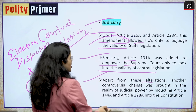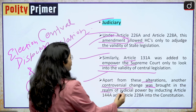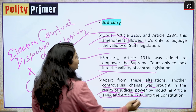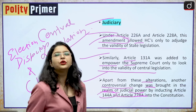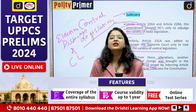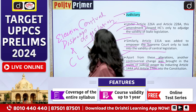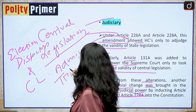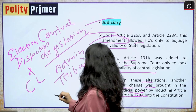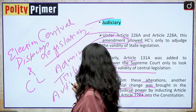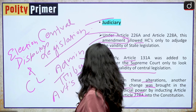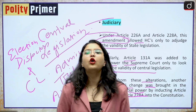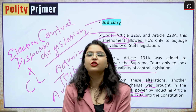Apart from these alterations, another controversial change was brought in the realm of judicial power by inducting Article 144 clause A and Article 228 clause A into the Indian constitution. Apart from this, this amendment also talked about the formation of administrative tribunals under Articles 323 clause A and 323 clause B, and it also talked about the formation of all India judicial services.